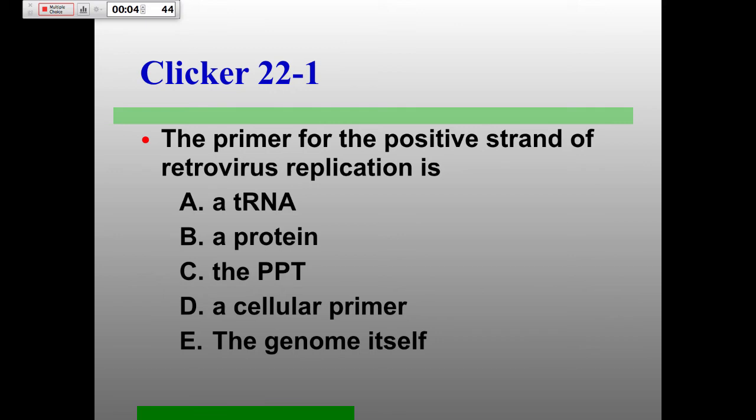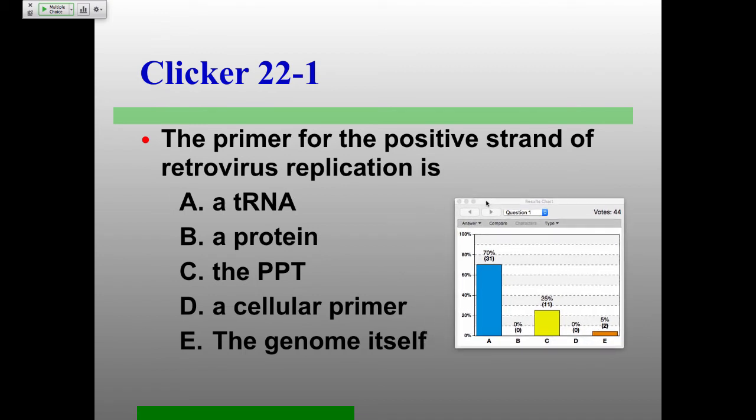It's a key concept. The key concept is the tRNA primer for the negative strand — because it binds to the positive strand of the genome. So yes, for the negative strand it is a tRNA, but not for the positive strand. For the positive strand it's the PPT. I didn't mean it to be a trick question, I really didn't.